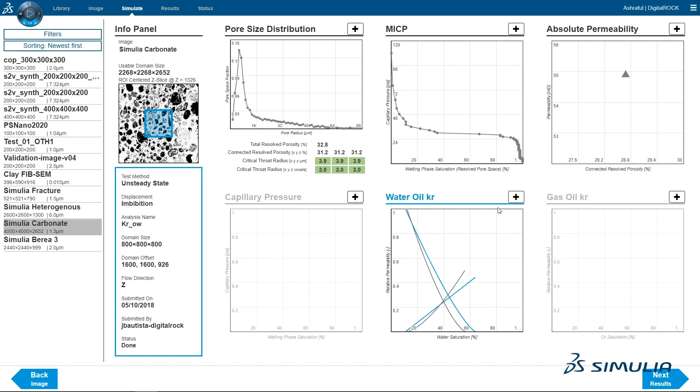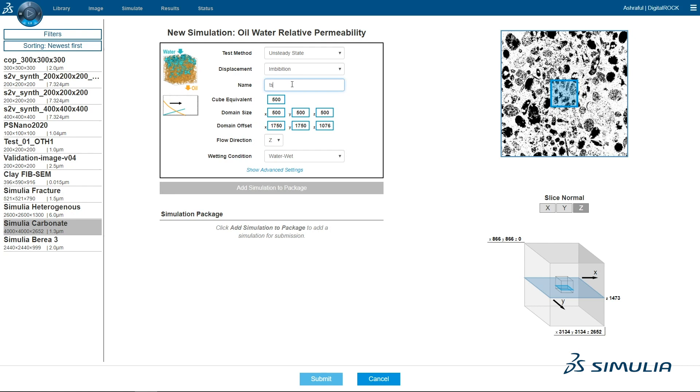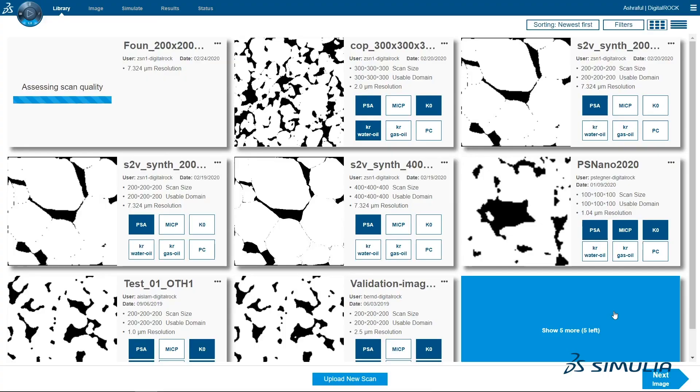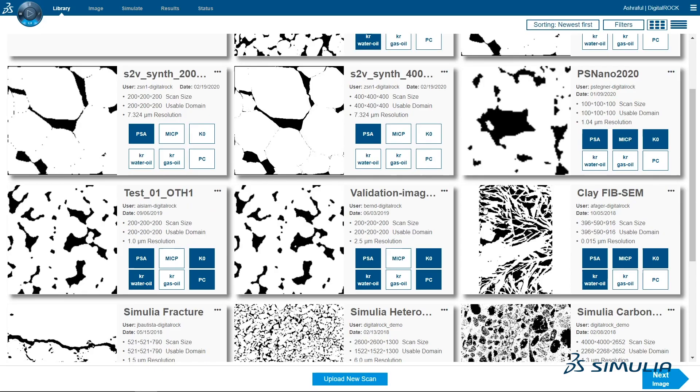We've taken our world-class fluid flow simulator and used it to power a digital version of the lab experiments, providing essential rock properties in a matter of days. This huge speed-up allows for much more analysis and deeper analysis, leading to reduced uncertainties and better reservoir characterization.